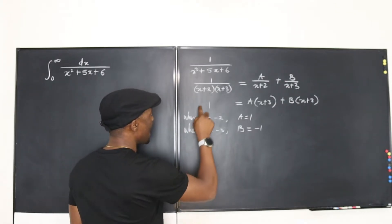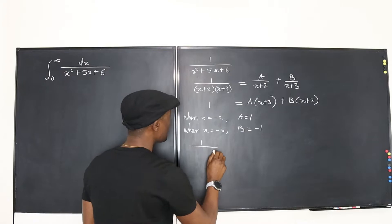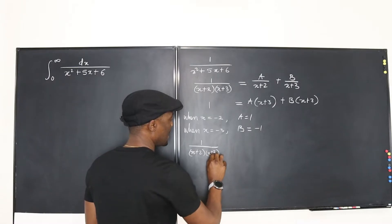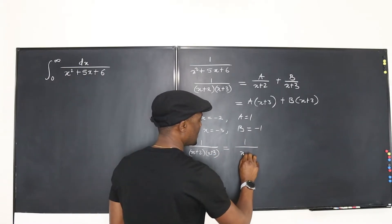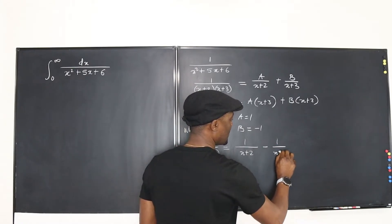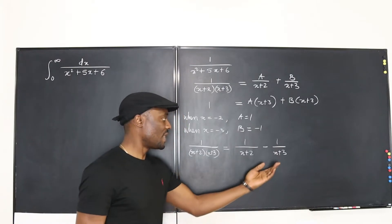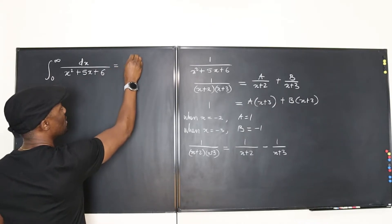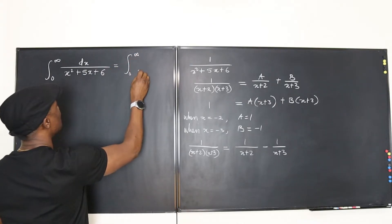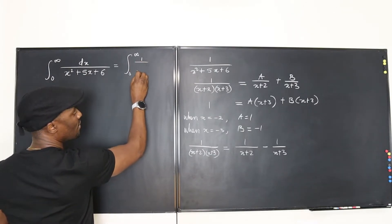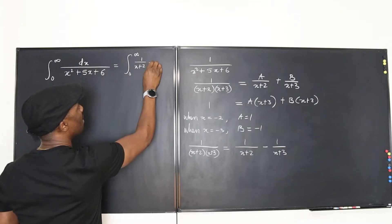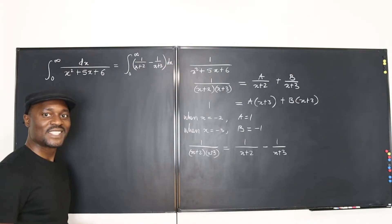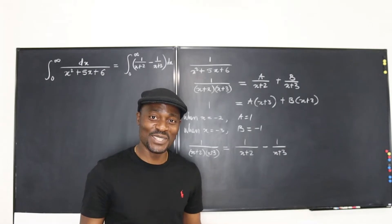So we can confidently say that 1 over (x+2)(x+3) can be rewritten as 1 over (x+2) minus 1 over (x+3), because B is negative 1. Therefore the integral from 0 to infinity of 1 over (x+2)(x+3) dx equals the integral from 0 to infinity of [1/(x+2) minus 1/(x+3)] dx. That's a simplified form and easier to deal with.